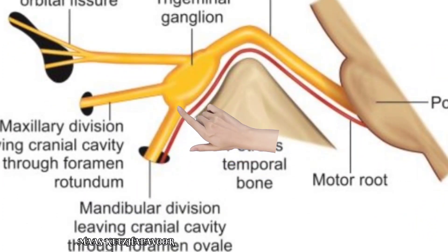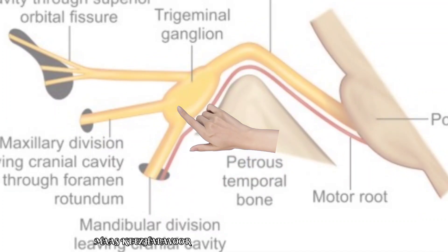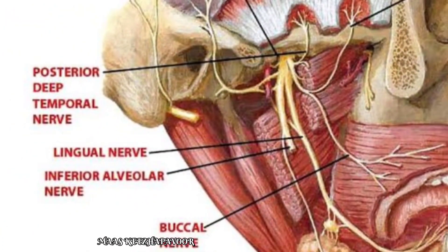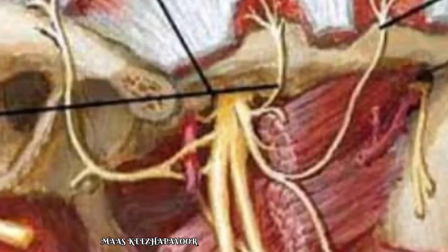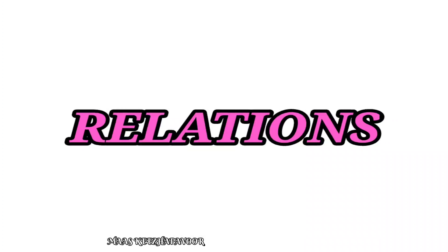The mandibular nerve is the nerve of the first pharyngeal arch. Both the sensory and motor roots of the mandibular nerve pass through the foramen ovale. As they emerge out of the foramen ovale, the two roots join together to form a single trunk.